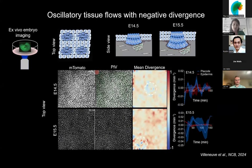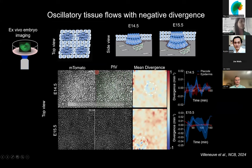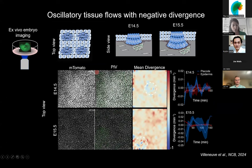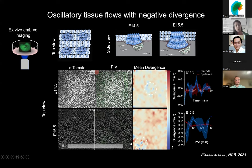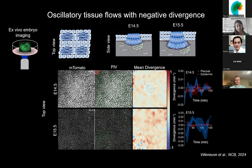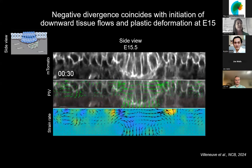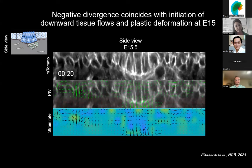We then asked what could trigger those initial morphological changes. We established an ex vivo embryonic live imaging model to visualize the dynamics of placode development, placing the entire embryo under the microscope. We could observe oscillations within the tissue associated with a negative strain rate within the placode, surrounded by a positive strain rate in the interfollicular epidermis. This negative divergence detected within the placode means the placode is under compressive or contractile stresses. Looking at the placode from the side view, this net negative divergence coincides with the initiation of a downward tissue flow and plastic deformation of the placode structure.